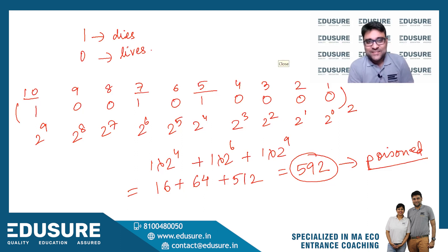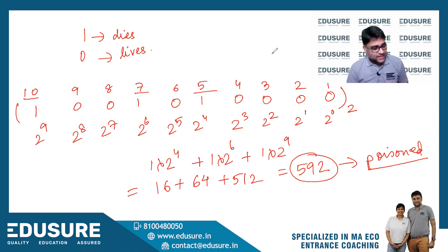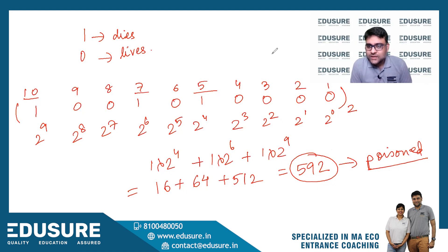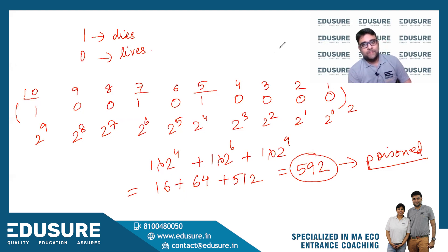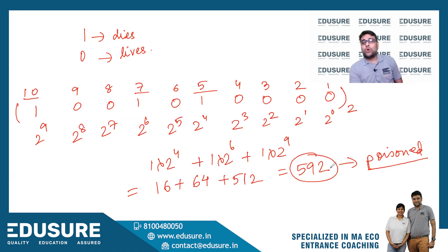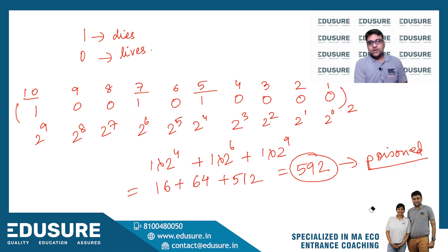In an examination setting, this approach is very difficult to come up with because you need to think in terms of binary numbers. This solution is provided for your knowledge — if this question repeats, now you know how to solve it. Essentially, whichever prisoners die gives a binary number; convert it to decimal to get the bottle number. Note that bottle number 592 means the 593rd bottle, since numbering starts from 0.